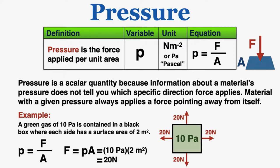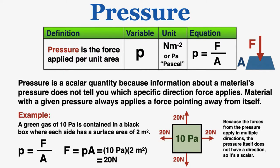And you can see that the force it's applying is not just applying in one specific direction, it's not just applying up or down or left or right, it's applying outward everywhere. So because the forces from the pressure apply in multiple directions, the pressure itself does not have a direction, so it's a scalar, not a vector.